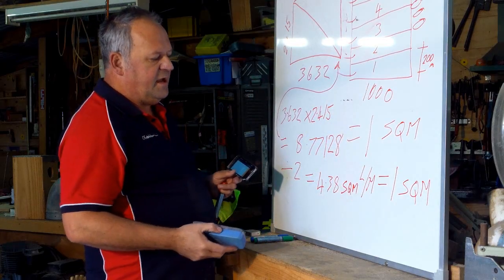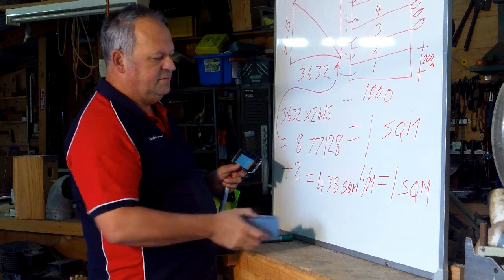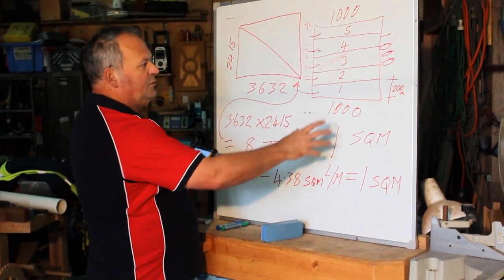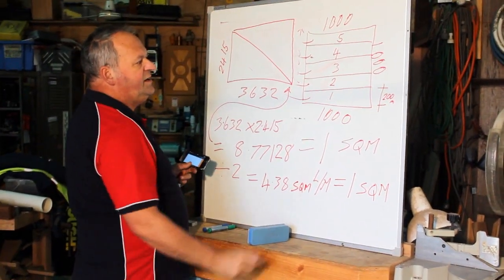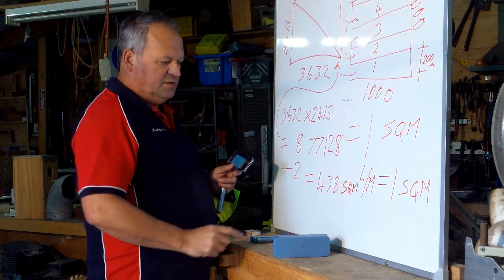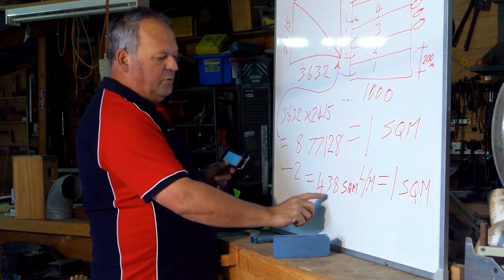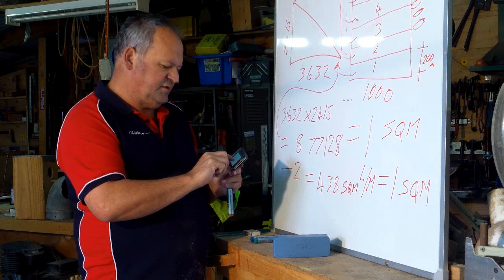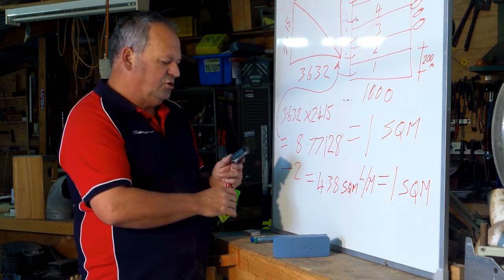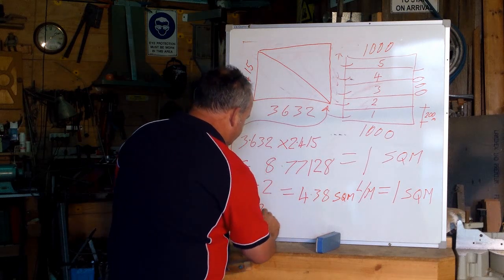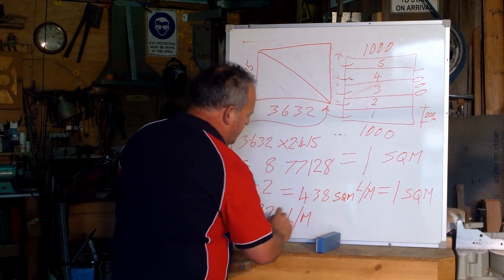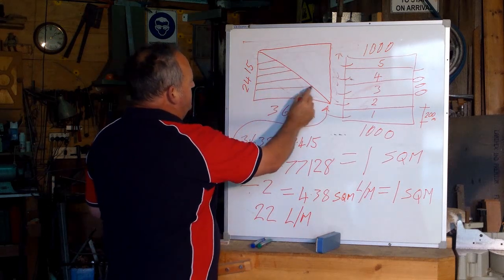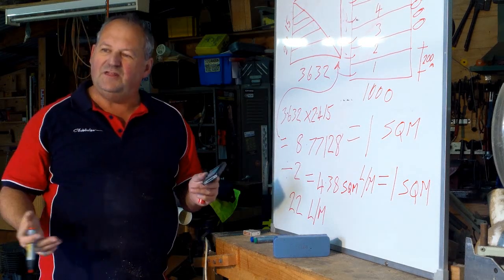Now, we need to find out how many lineal metres go into it. So, it's simple. We worked out that there's 5 lineal metres for each square metre. So, we go 4.38 multiplied by 5. Just times 5 equals 21.9. So, 22 lineal metres of board, which will cover that triangle.